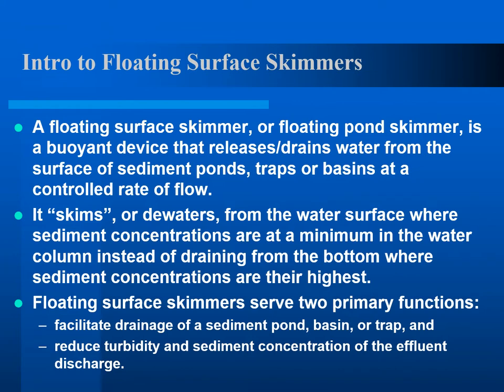The floating surface skimmer is a floating device that releases or drains water from the surface of sediment ponds, traps, or basins at a more controlled rate of flow. It skims from the surface where sediment concentrations are at a minimum, rather than draining from the bottom where they are highest. Skimmers serve two primary functions: to facilitate drainage of the pond, and to reduce sediment concentration of the effluent discharge — though reduction in turbidity is typically minimal, around 10%.